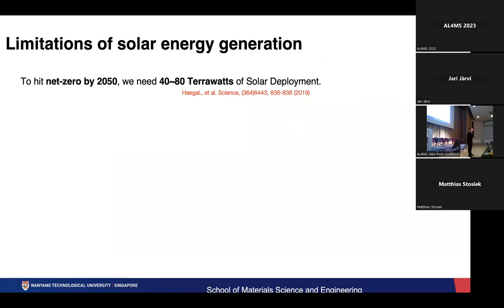At the risk of sounding slightly schizophrenic, I want to go back to another elephant in the room in most scientific conferences — we'll talk a little bit about climate change. You and I know what's happening, it's real. If we don't do our jobs properly, we might wipe out half of mankind. But depending on who you speak to, what we really need to do is to hit net zero by 2050, and estimates vary between needing 40 to 80 terawatts of solar deployment.